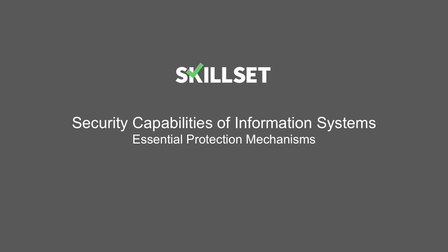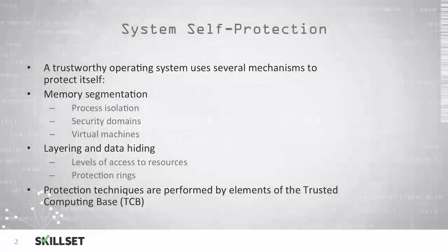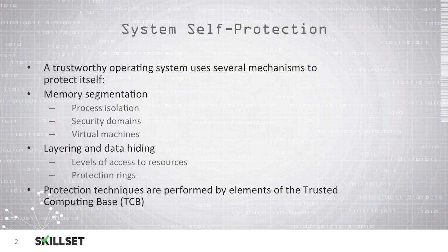Welcome to our Security Capabilities of Information Systems Essential Protection Mechanisms module. Well-designed operating systems will attempt to protect themselves from malicious code or poorly designed code using several mechanisms. Memory segmentation is one of these mechanisms — the operating system will isolate processes from each other, create security domains which processes will operate in, and also can use virtual machines to segment or isolate various applications and operating systems from each other.